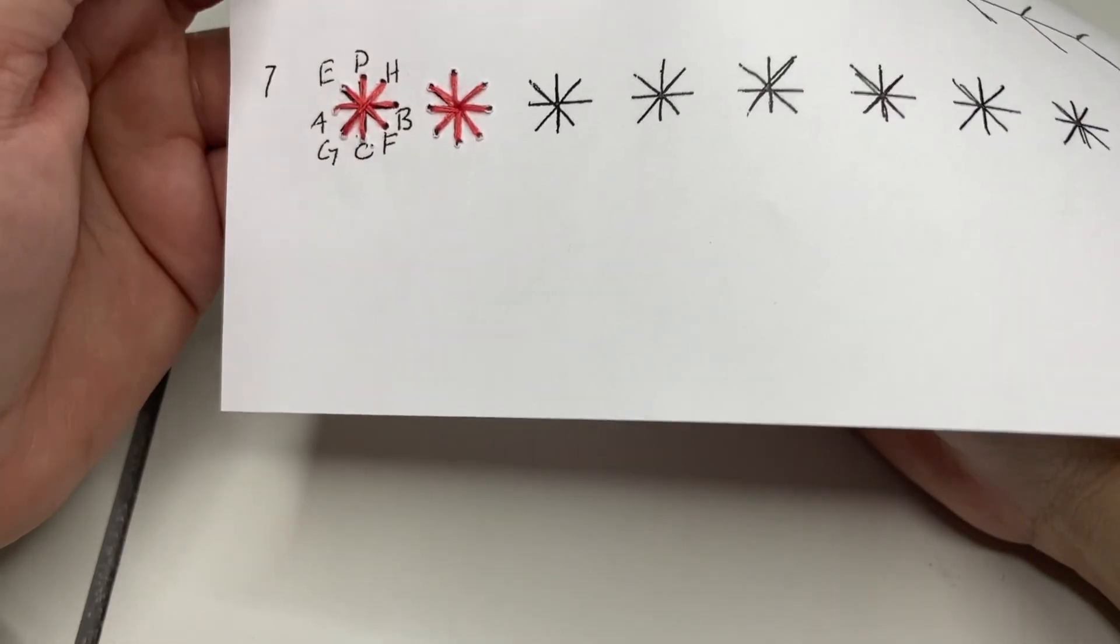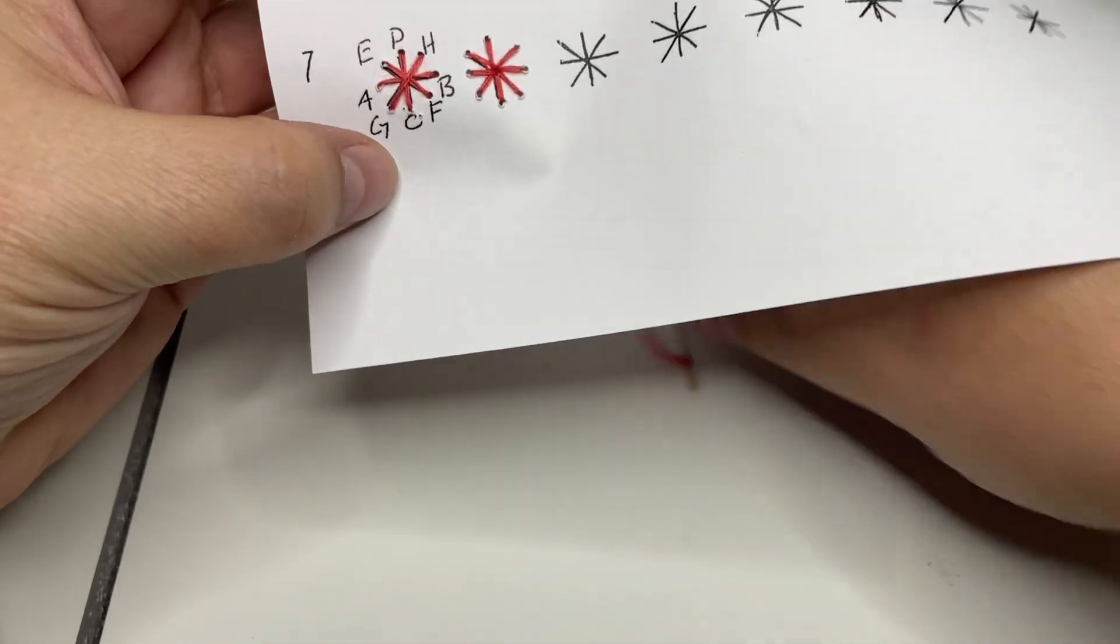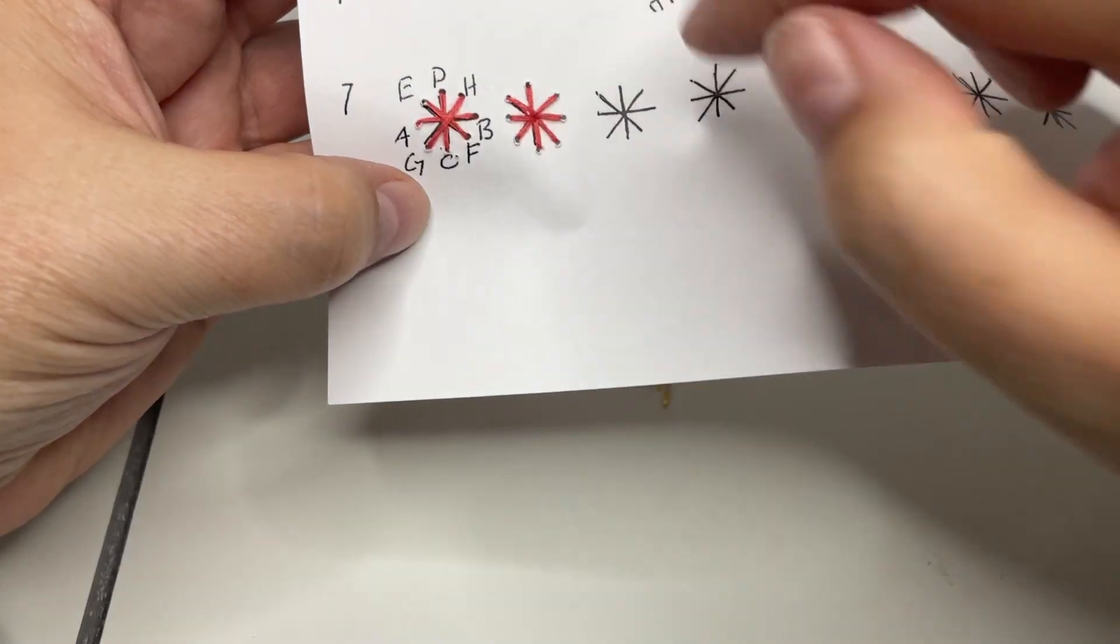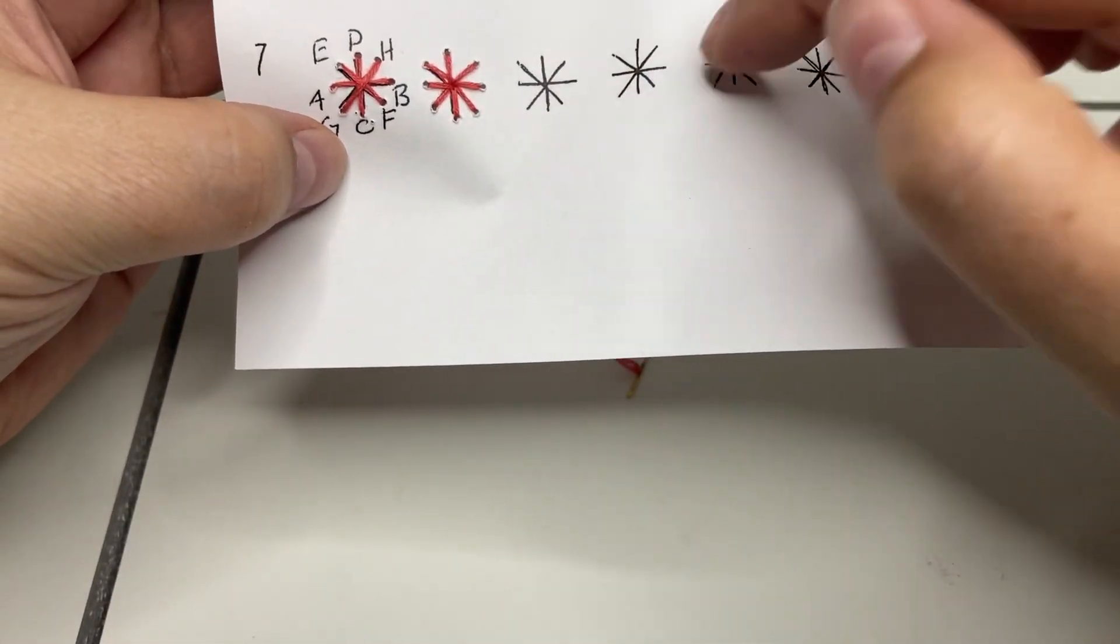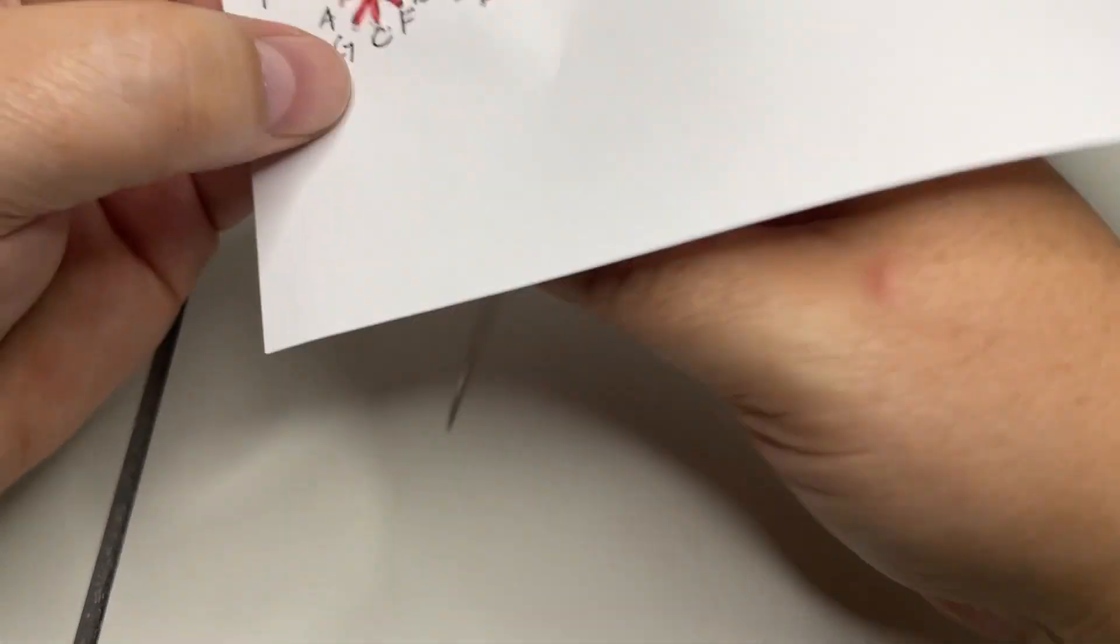And then you can just use that method for all of them. Okay, so those are the two different methods for the star. The first one we made a plus sign first, then an X. And then for this one we took all the edges around the outside and went in towards the middle.